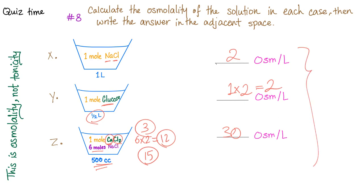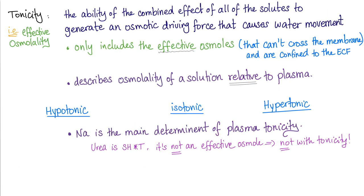When we calculate the osmols in the plasma, this is osmolality — this is not tonicity. When we judge a solution and call it hypotonic, isotonic, or hypertonic, this is tonicity. Osmolality doesn't care if you are an effective osmol or not — it counts everything, including calcium chloride. But tonicity is different: tonicity is effective osmolality relative to the plasma — hypotonic, isotonic, or hypertonic.